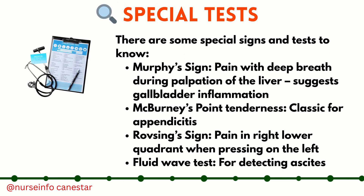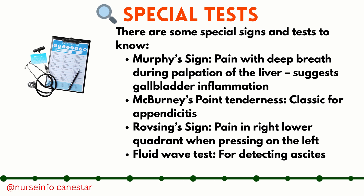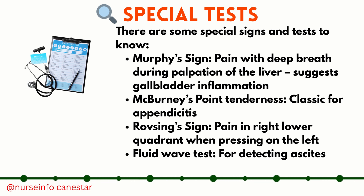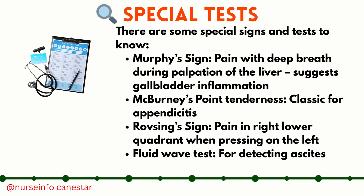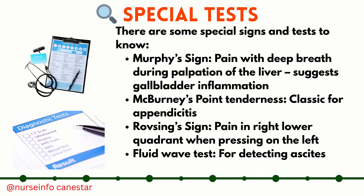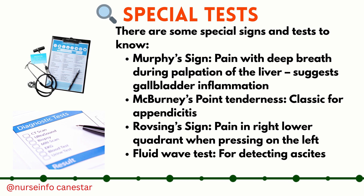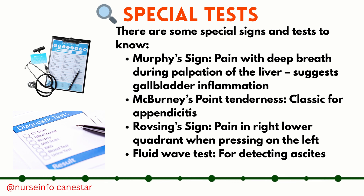There are some special signs and tests to know. Murphy's sign: pain with a deep breath during palpation of the liver area, suggesting gallbladder inflammation. McBurney's point tenderness: classic for appendicitis. Rovsing's sign: pain in the right lower quadrant when pressing on the left. The fluid wave test is used for detecting ascites.